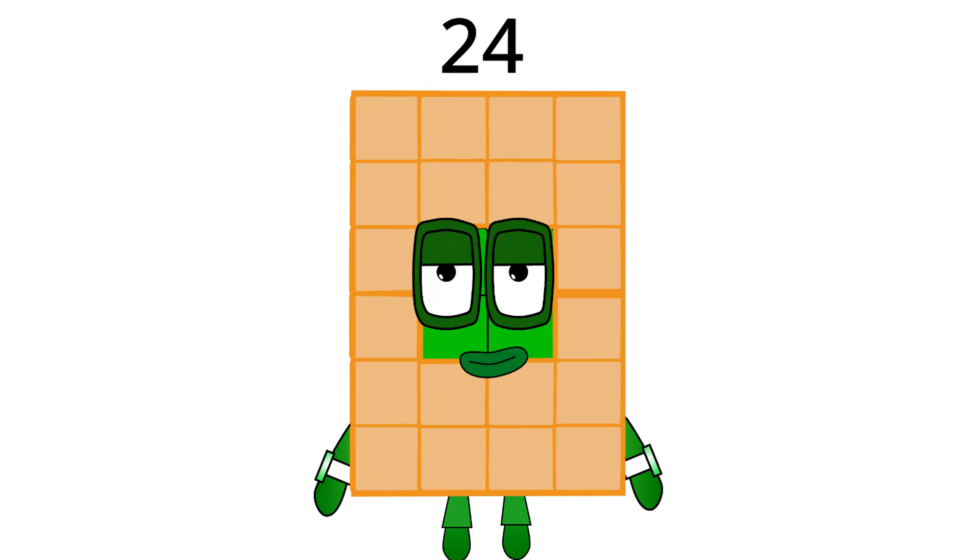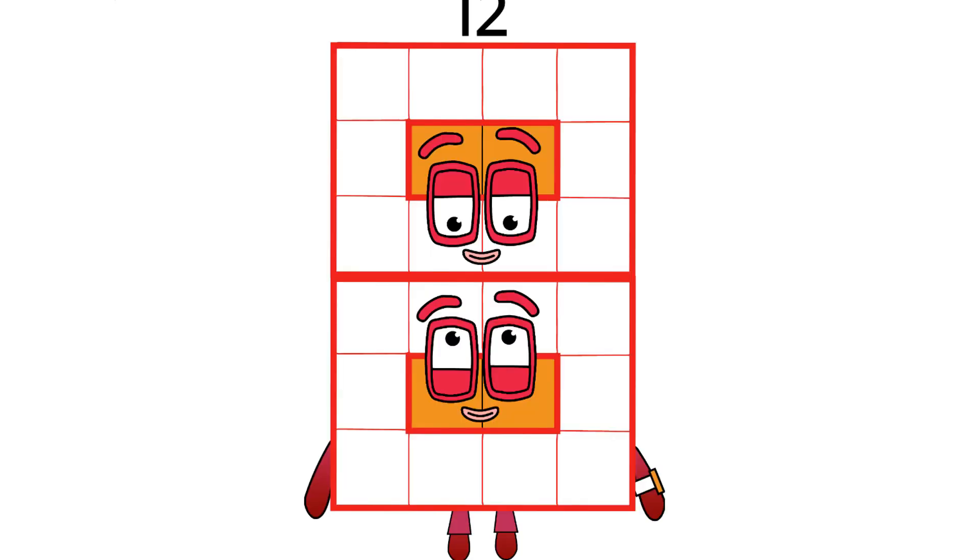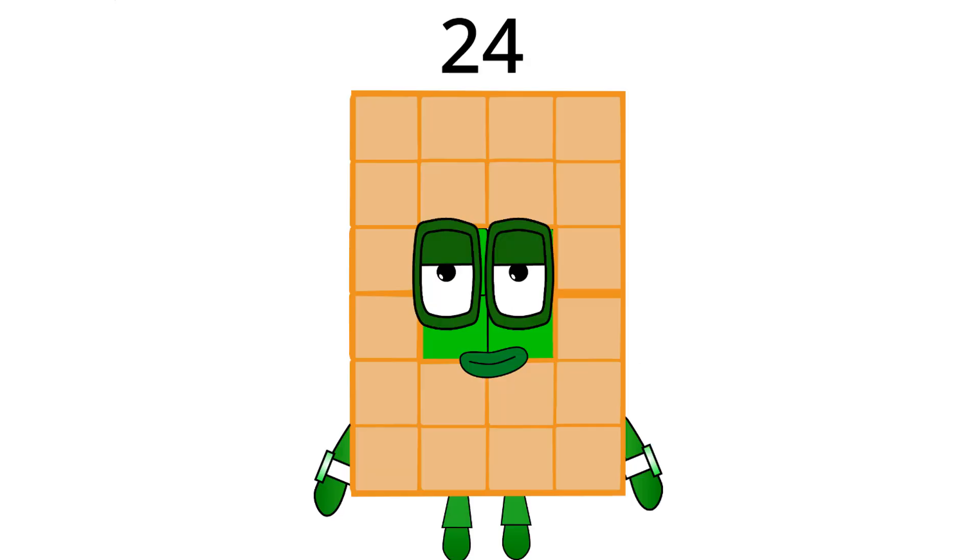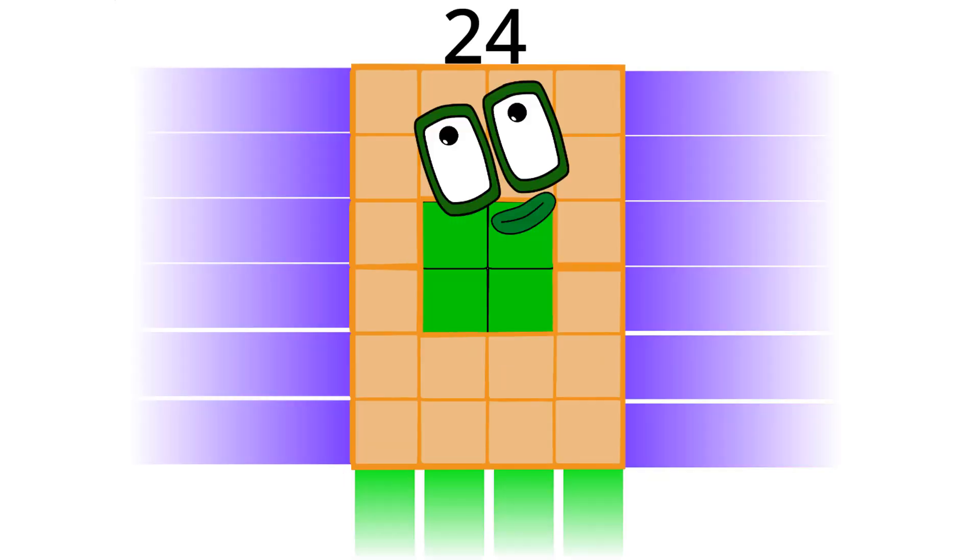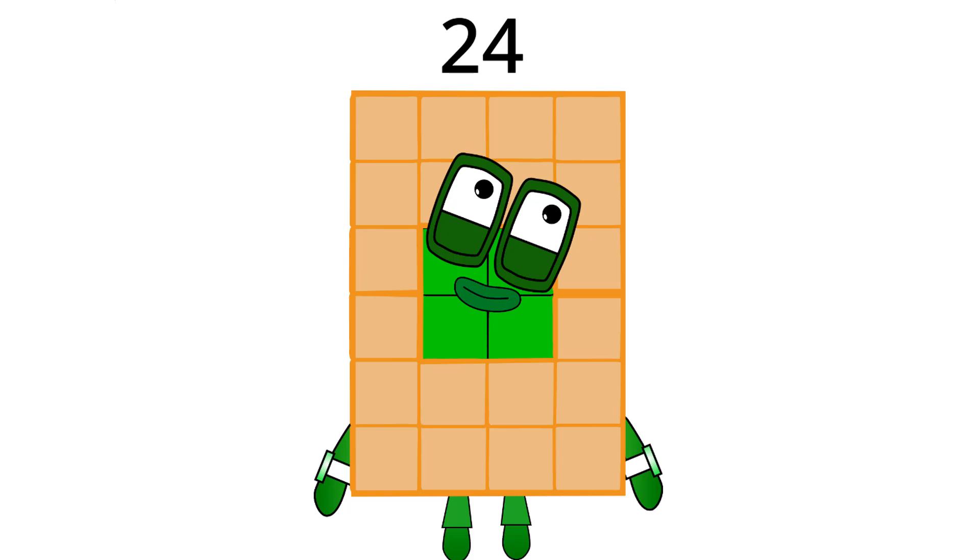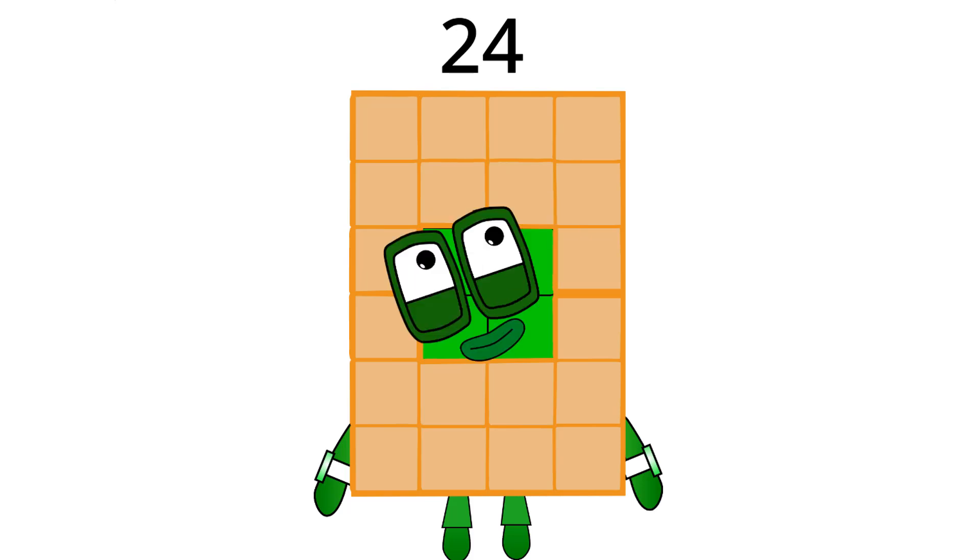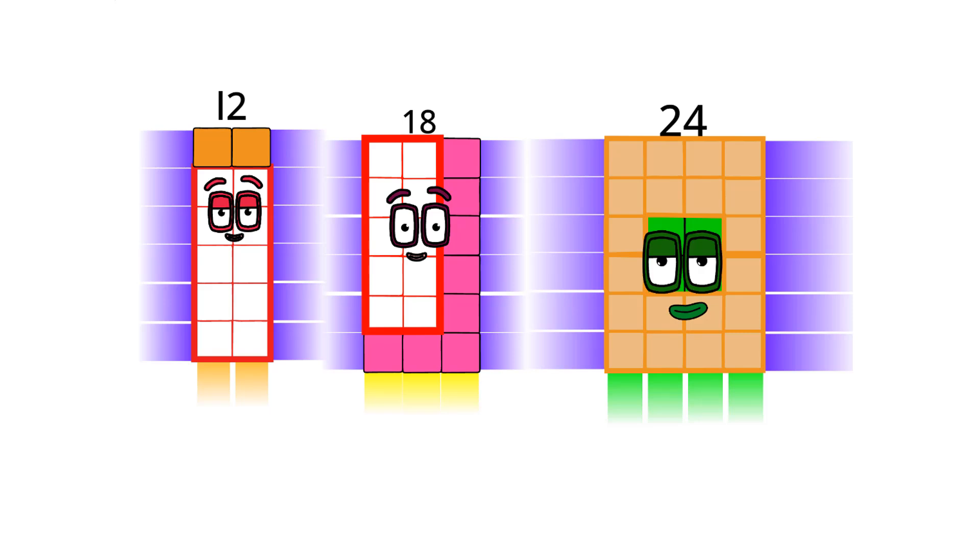Hello, I am 24 and I am double 12, which means I am a super rectangle. I like to go fast like 18 because I am faster. If you want to learn more about super rectangles like me, here it is. 12 is 2 times 6, 18 is 3 times 6, and I am also 4 times 6.